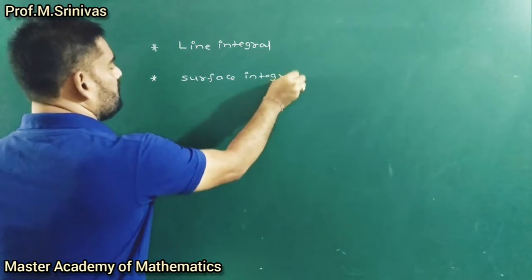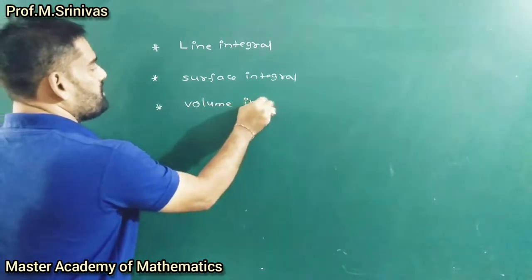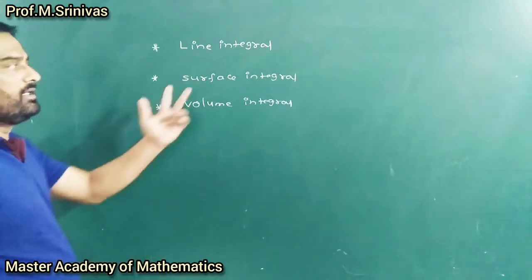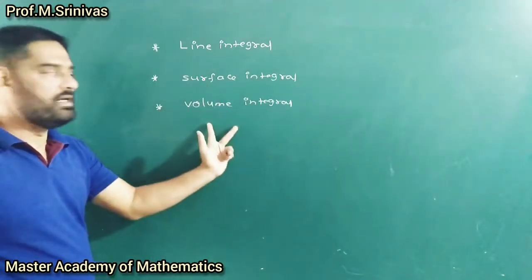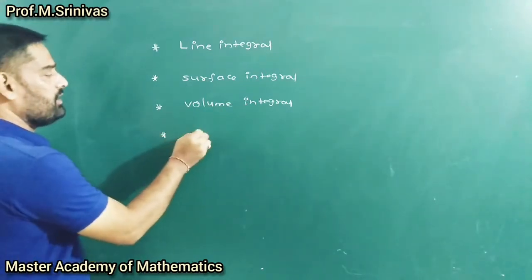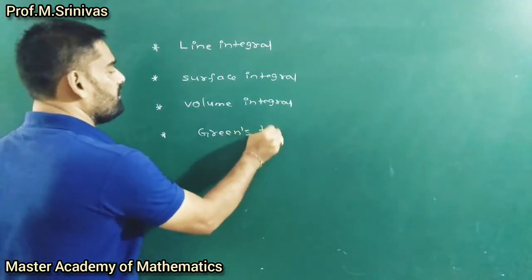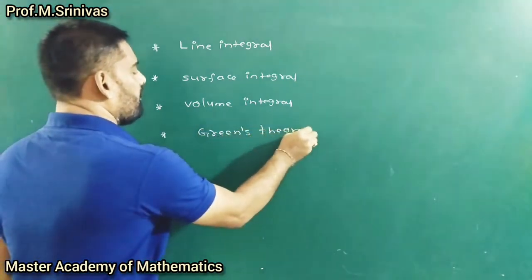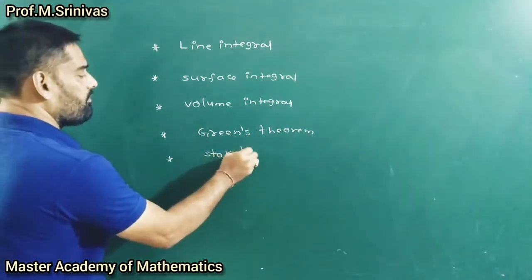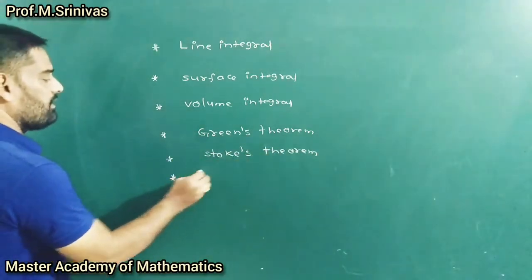If it is a single integral, we call it line integral. Double integral is surface integral. Triple integral is volume integral. After that, we have three theorems: Green's theorem, Stokes' theorem, and Gauss' theorem.